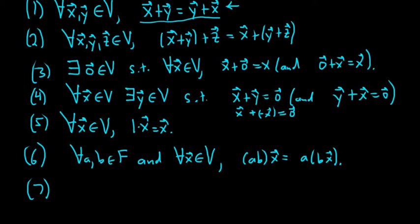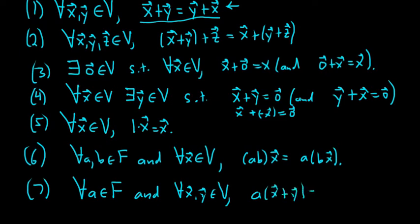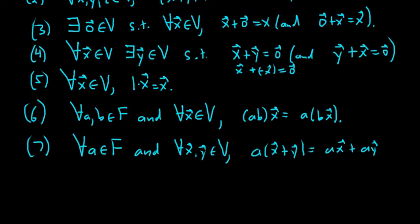Almost done. Seven. There's eight vector space axioms, so that's quite a few. For all elements a in our field and for all x, y in our vector space, we have a times x plus y equals ax plus ay. So we have distributivity, and that's in that regard.